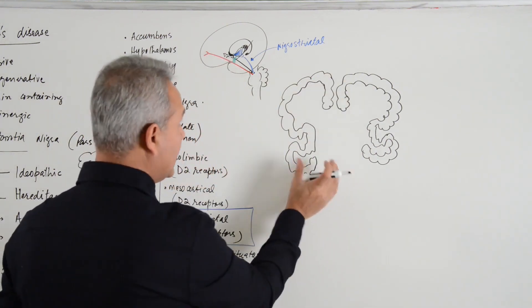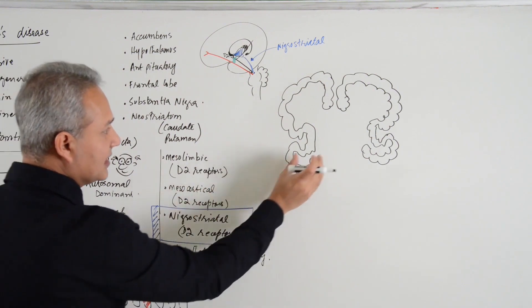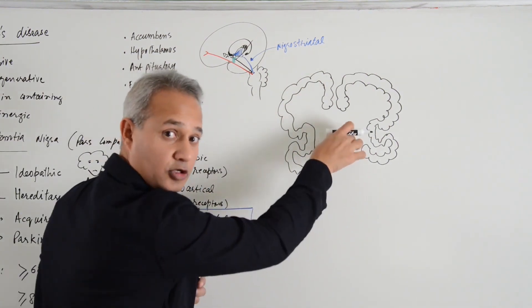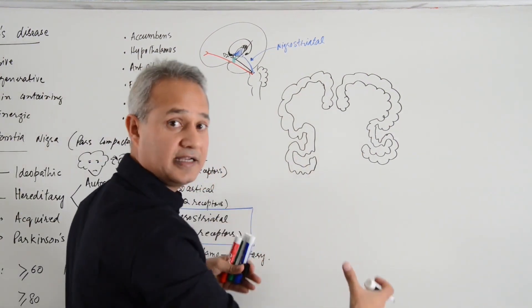This is the cerebrum. Ideally the basal ganglia is sitting here. I am going to pull this down so we can expand it and talk about it.